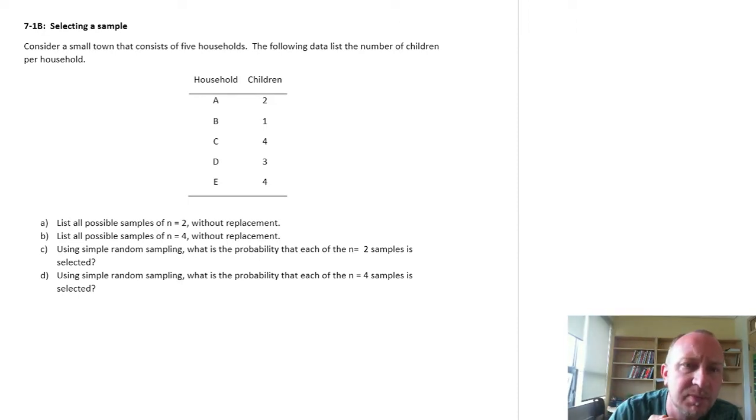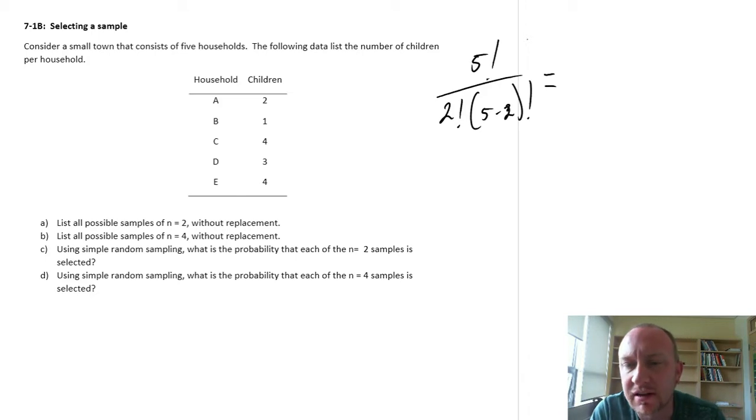For the first one, all possible samples of n equals 2, it's helpful to know how many samples are available. We need to figure out how many combinations of 2. If I have 5 elements in that population, I'm going to choose 2: 5 factorial over 2 factorial times (5 minus 2) factorial. You may remember this formula from our discussion on combinations and permutations.